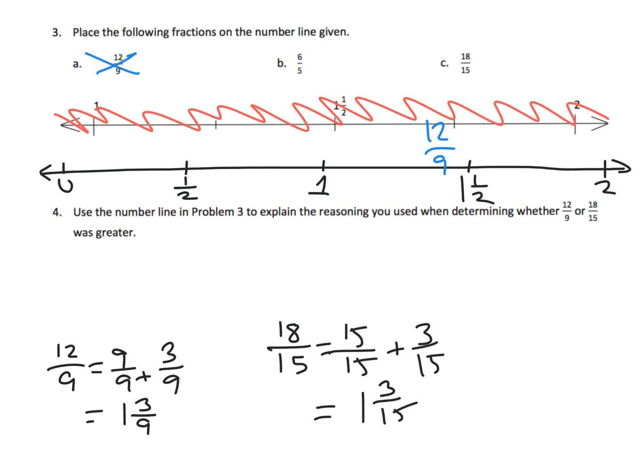So if you think about it, 1 and 3 fifteenths, it's clearly going to be larger than 1, so it's going to be over here somewhere. But 3 out of 15 is barely anything, so that's really barely over one whole. It's barely over one whole. So I'm going to put it over here, rather than kind of close to 1 and a half. I'm going to kind of keep it over here.